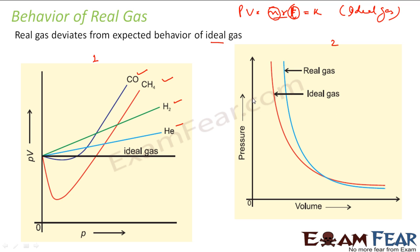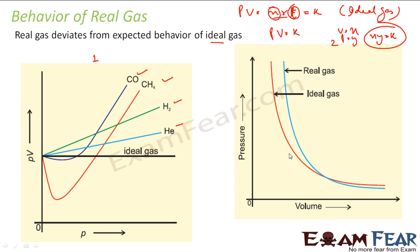If you draw a PV versus volume graph, PV = constant means if volume is X and P is Y, you get XY = constant, and you get a hyperbolic graph. For an ideal gas, this was the expected graph. But for real gas — for example, for helium, when chemists did the experiment — they found the lines do not match. So we can say that the ideal gas deviates from the real gas, or the real gas deviates from the ideal gas. The behavior of real gas and ideal gas is not the same.